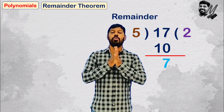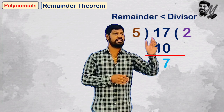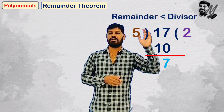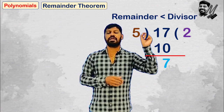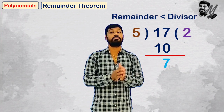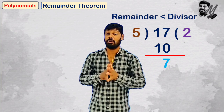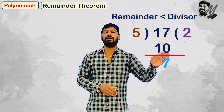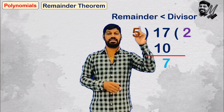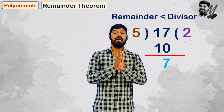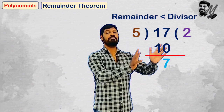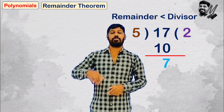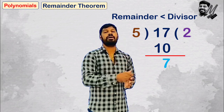The remainder should always be lesser than the divisor. This is a very small point but the most powerful point. Remember that the remainder should be lesser than the divisor. So we have to correct the numbers accordingly. That is the polynomial.